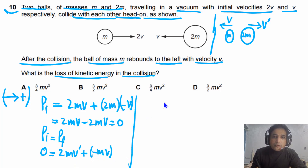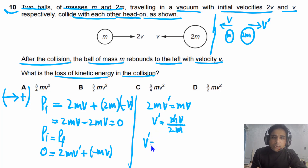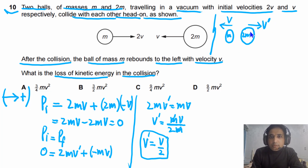From here, 2m v prime equals mv. Dividing both sides by 2m, v prime equals v divided by 2. So the velocity of the 2m ball after collision is v/2. We can also see this quickly: since momentum is conserved and the mass is double, the velocity must be half.